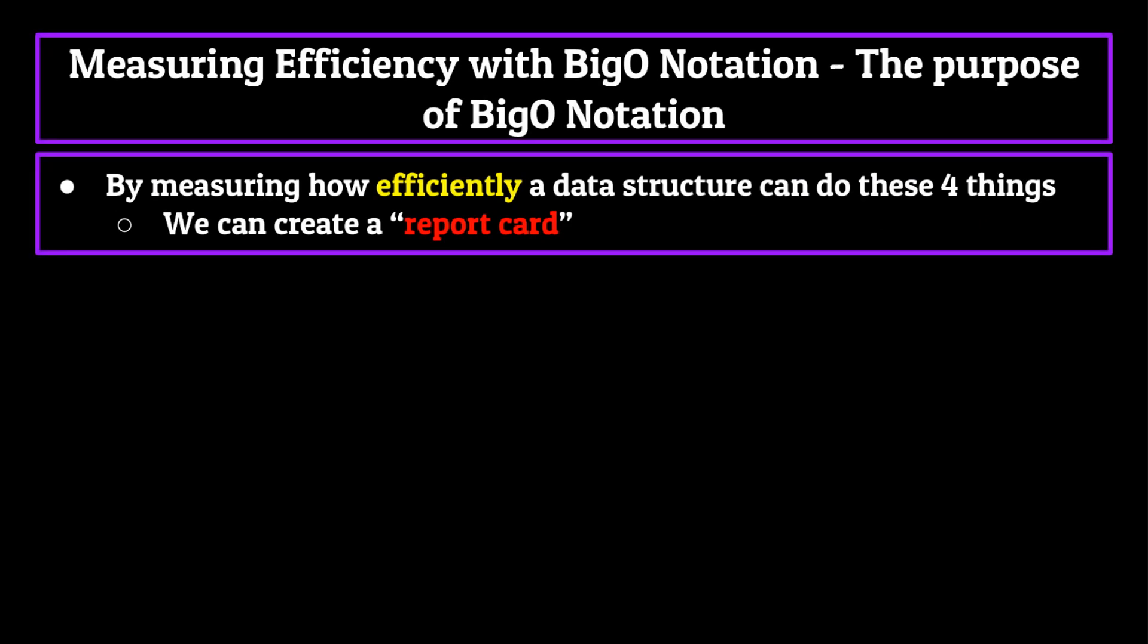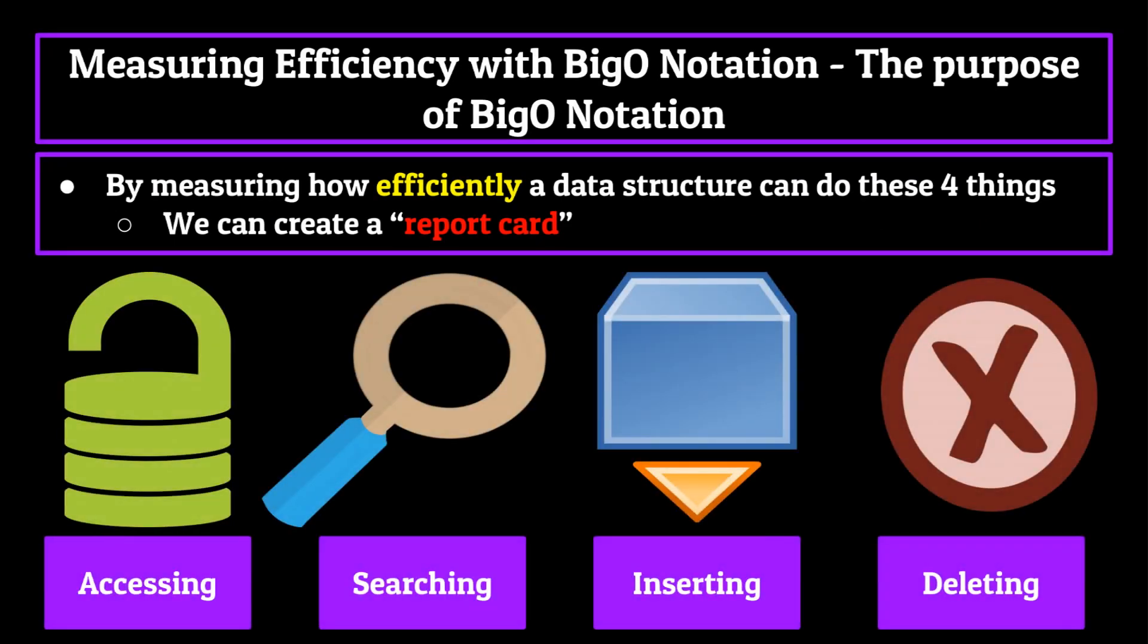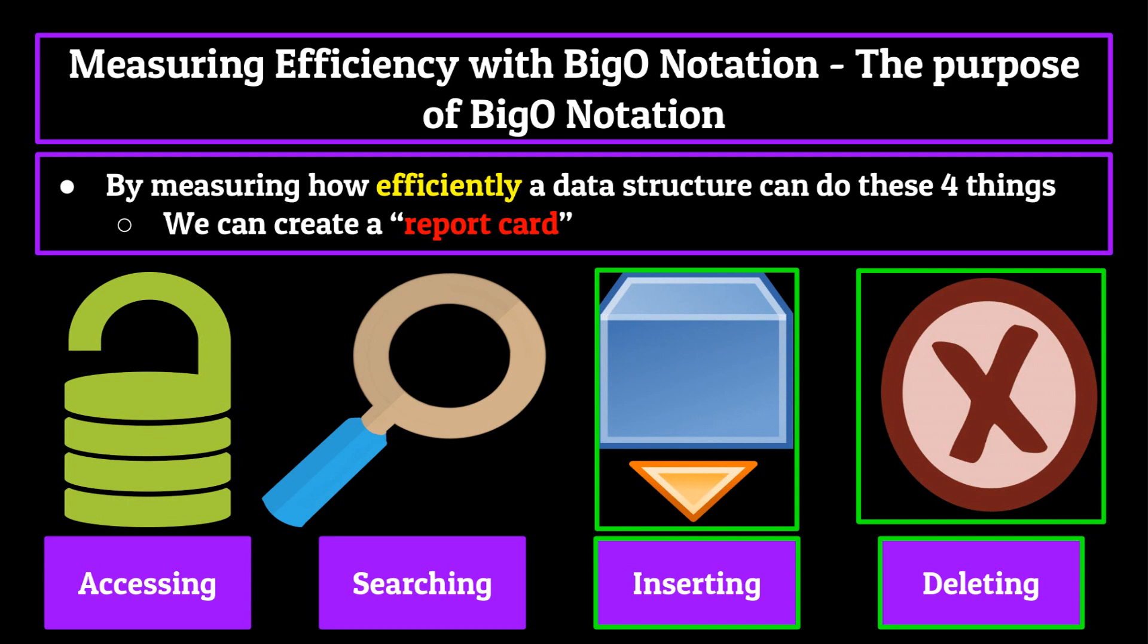By measuring how efficiently a certain data structure can do these four things, we can basically create a report card of sorts which measures how effective a certain data structure is. If we need to store data that is easily accessible to the end user, we might choose a data structure which can access elements within itself the fastest. Vice versa, if accessing elements isn't the most important thing to us, but we need a data structure which can easily be added to and deleted from, we would go for one which is fastest in that specific functionality.